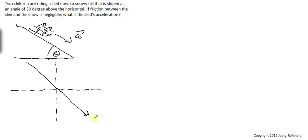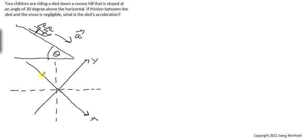The sled will continue to move down along the surface of the slope. Therefore, I choose this as the positive x-direction, going in the downward direction. Consequently, the y-direction has to be perpendicular to x and perpendicular to the surface of the slope. By comparing the two pictures, we can identify this is the angle theta, 30 degrees in our case.